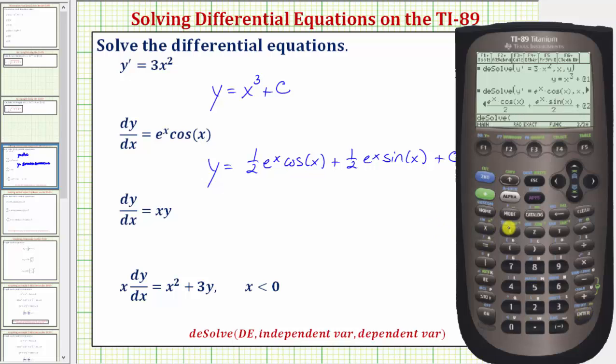And then y prime for dy dx. So y second equals sign equals x times y, comma, x, comma, y, close parenthesis, and enter.